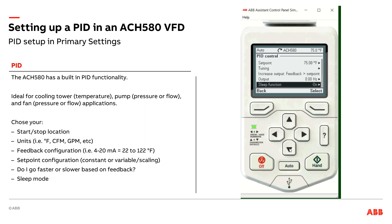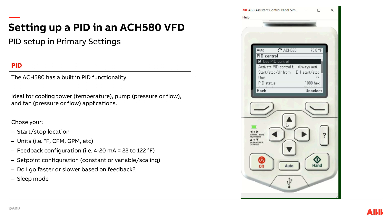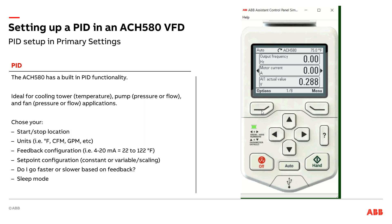So there you have it — setting up a PID control on the ACH 580. One other neat thing: if I come all the way back to the home view and hit the left arrow, you can see that it's already set up for PID. I've got my cooling tower set point at 75 degrees, my feedback right now is 79 degrees, and I'm not running. It's a little quieter when I do this when the equipment's not actually running. So there you have it — how to set up a cooling tower PID on the ACH 580. Thank you.